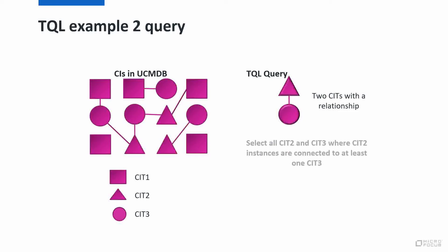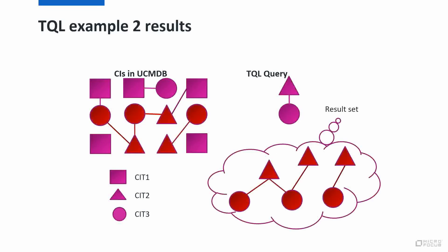For a second example, we want all triangles that are connected to at least one circle. How many triangles do we have that are connected to a circle? There are 3 triangles connected to 3 circles. In reality, there are several circles and several triangles that get picked up — for example, this triangle to this circle, the same triangle to this circle, this triangle to this circle, and this one to this circle.